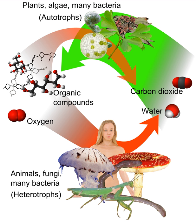Most autotrophs use water as the reducing agent, but some can use other hydrogen compounds such as hydrogen sulfide. Some autotrophs, such as green plants and algae, are phototrophs, meaning that they convert electromagnetic energy from sunlight into chemical energy in the form of reduced carbon.